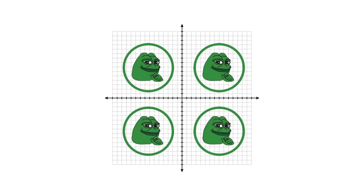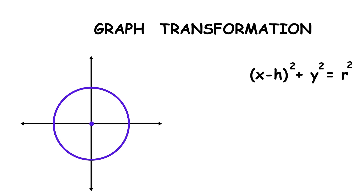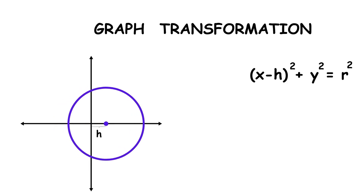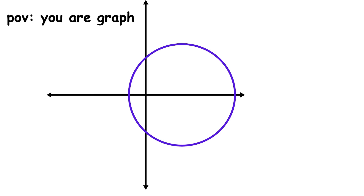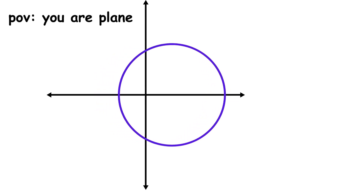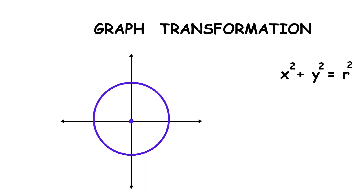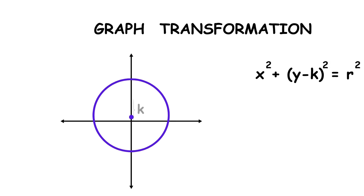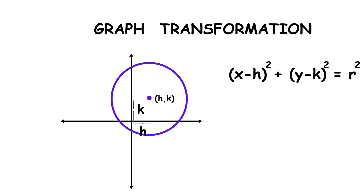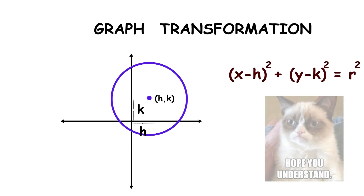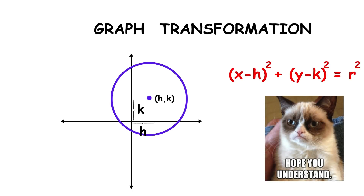To generalize this so the circle can be anywhere in the plane, we use graph transformations. Replacing x with x minus h shifts the graph h units to the right. Similarly, replacing y with y minus k shifts the graph k units upward. So to center the circle at the point (h, k), we use the equation: the quantity x minus h squared plus the quantity y minus k squared equals r squared.